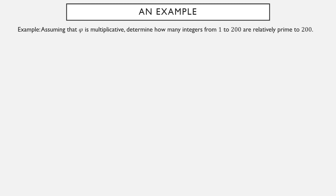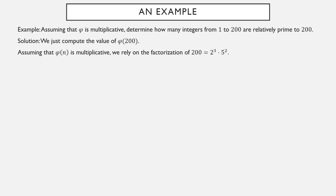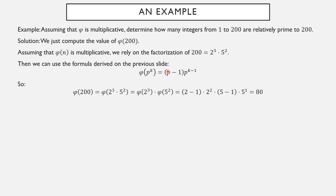Let's look at an example involving the Totient function. Using the fact that φ is multiplicative, how many integers between 1 and 200 are relatively prime to 200? Well, that's just asking us to compute φ(200). Now 200 has a straightforward prime factorization, and φ is multiplicative. φ(p^k) = (p−1) · p^(k−1), and we apply this to the factorization of 200. φ(200) = φ(2³) · φ(5²). For the prime 2 with power 3: (2−1)·2² = 4. For the prime 5 with power 2: (5−1)·5 = 20. So φ(200) = 4 × 20 = 80. In the list of numbers 1 to 200, exactly 80 of them are relatively prime to 200.